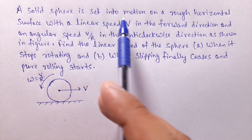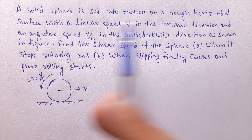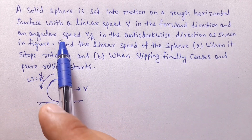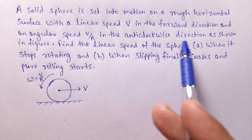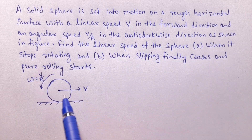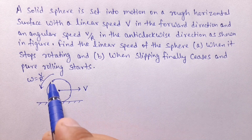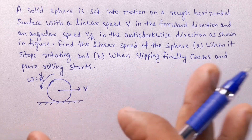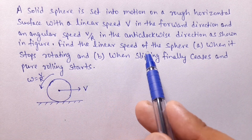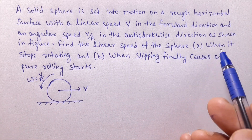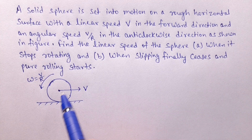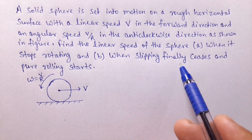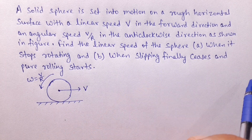A solid sphere is set into motion on a rough horizontal surface with a linear speed V in the forward direction and an angular speed V/R in the anti-clockwise direction. Linear speed V is in the right direction and omega equals V/R. We need to find the linear speed of the sphere: Part A when it stops rotating, and Part B when slipping finally ceases and pure rolling starts.